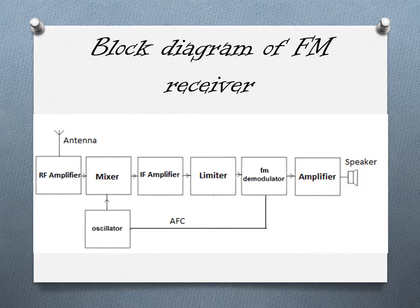This is a block diagram of the FM receiver circuit. The first component is the antenna, which receives the FM radio input. It passes it on to the RF amplifier. As the input is highly attenuated, the amplifier amplifies it and also acts as a bandpass filter, selectively letting only a particular frequency pass through it. The mixer then takes the input from the RF amplifier and the oscillator and produces the intermediate frequency — a fixed frequency of 10.7 MHz.